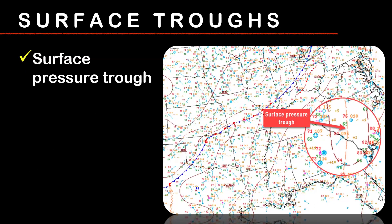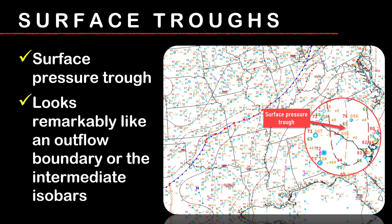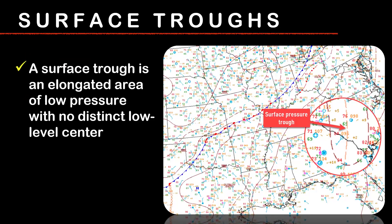Last but not least, you'll see something called a surface pressure trough. Unfortunately, it looks remarkably like an outflow boundary or even the intermediate isobars. But it is actually a surface trough — it won't be labeled; it just won't have any label associated with it, and that's essentially the guideline they use. A surface trough is really an elongated area of low pressure. It doesn't have any distinct low-level center or surface low-pressure system. Think about digging a trough in your backyard to bury a pipe — it's a divot or a low spot in the pressure area.